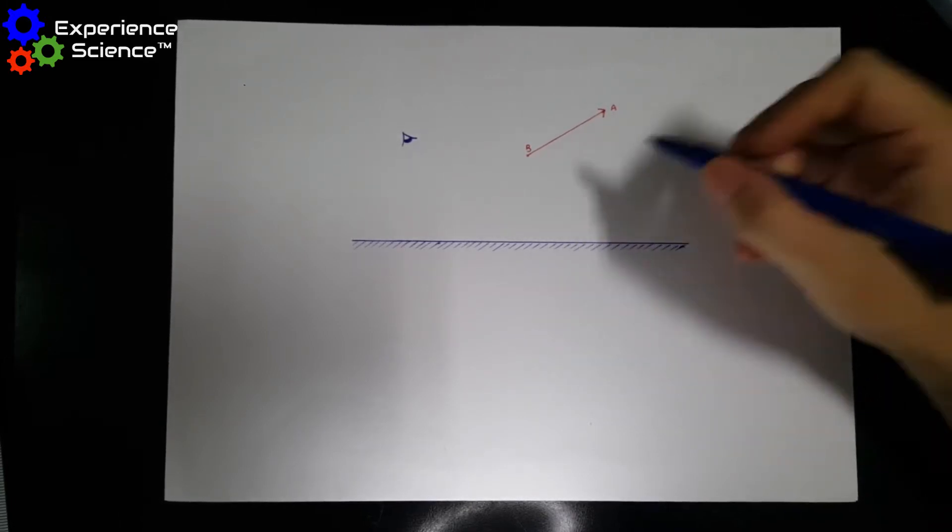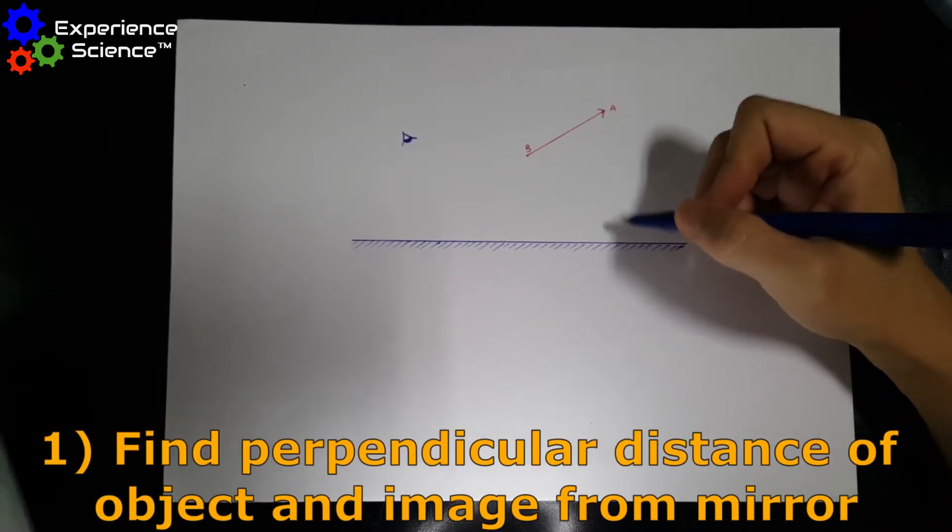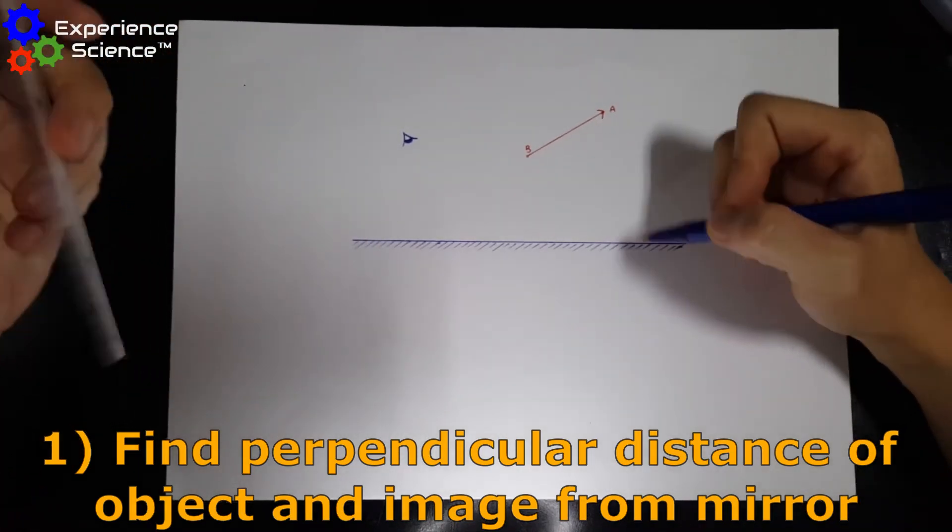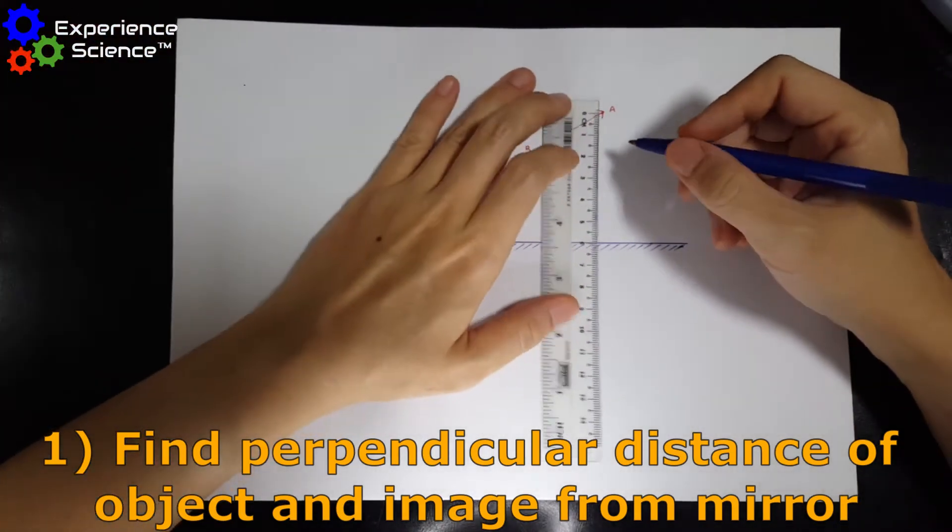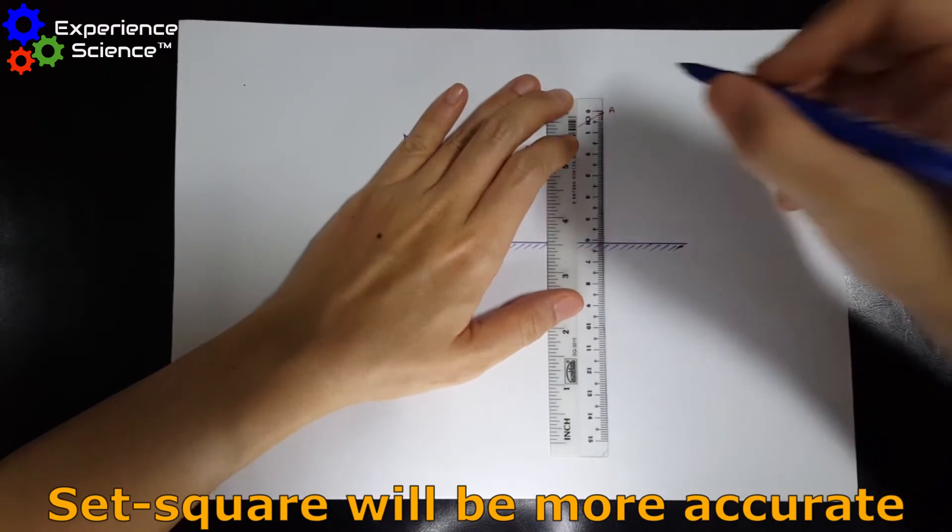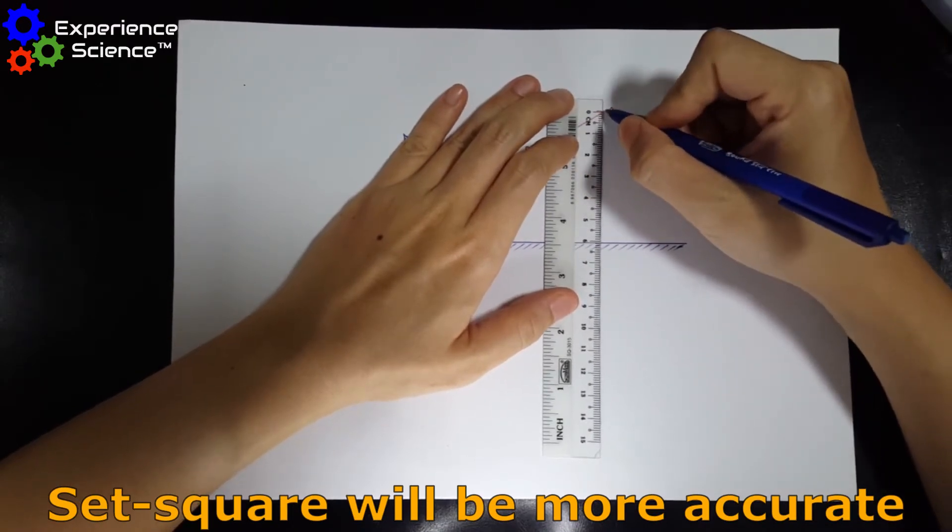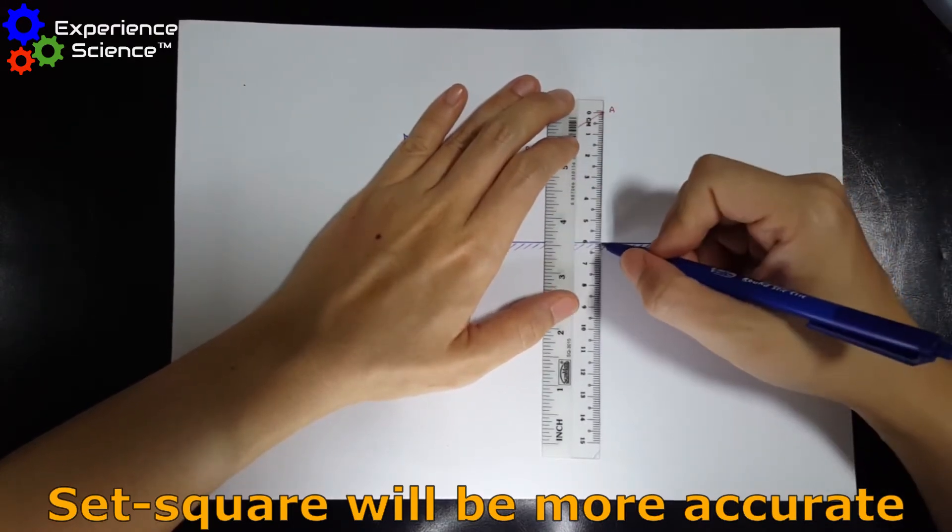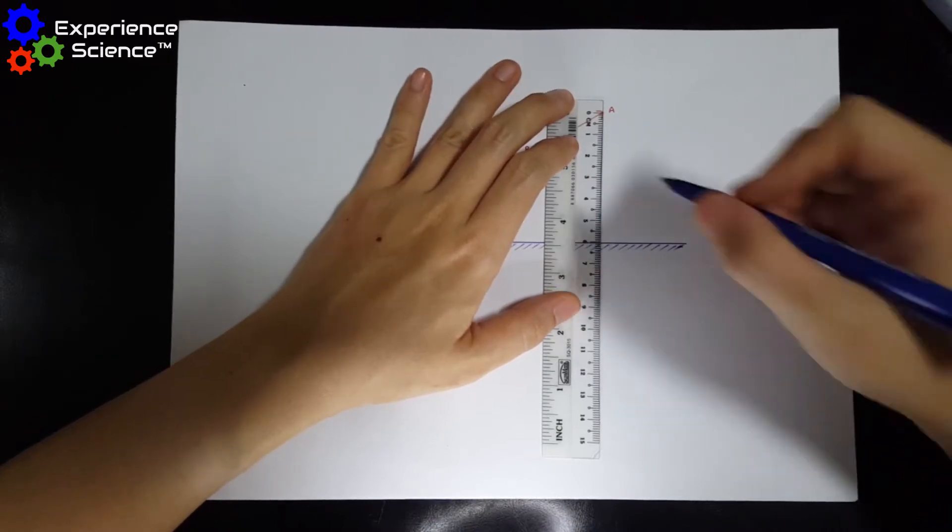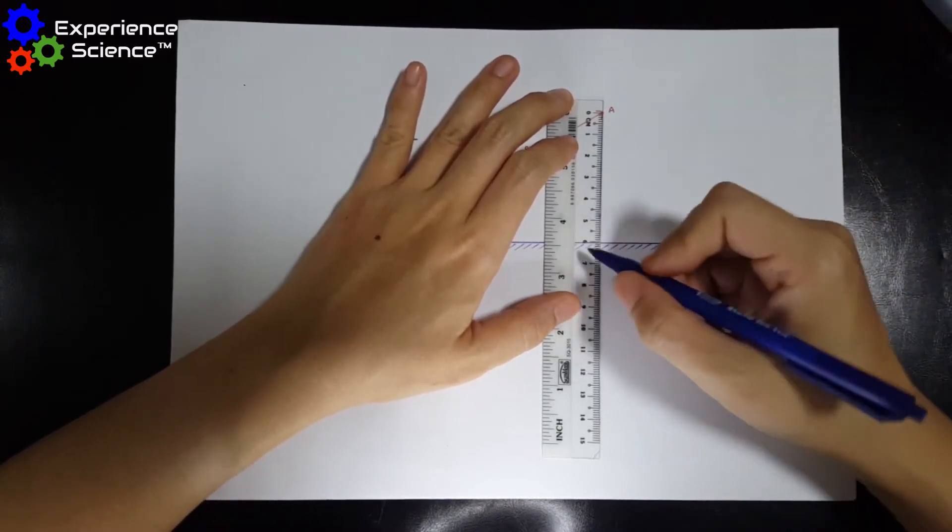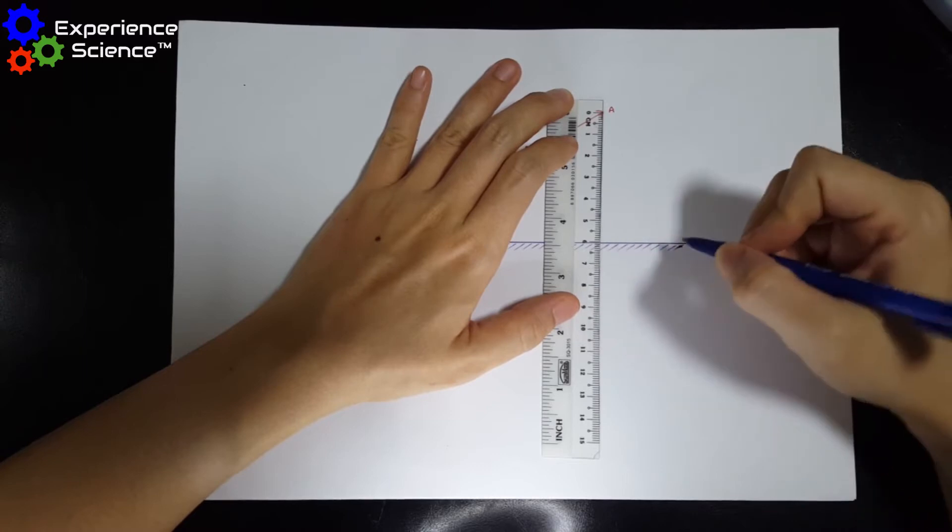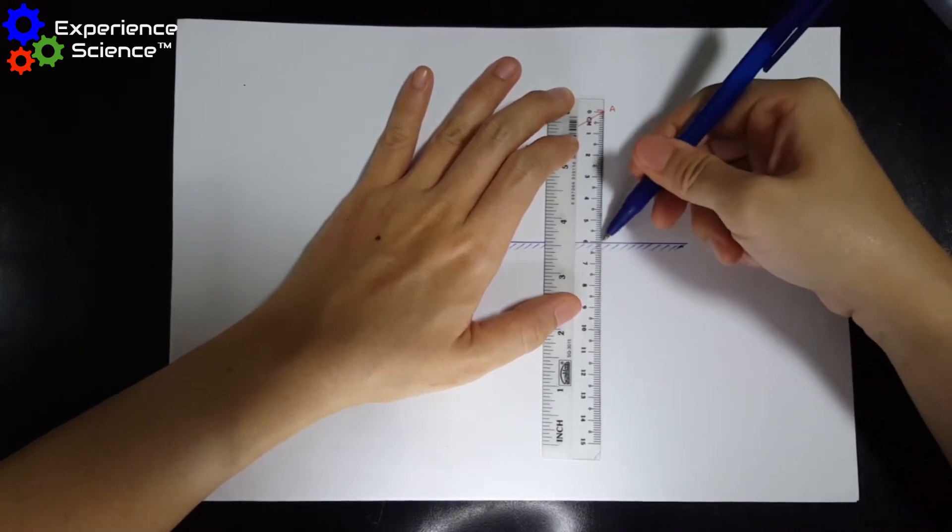The first thing we do is to find the perpendicular distance that the object is from the mirror. So we take a ruler and we measure from A to the mirror is about 6 cm. And therefore, the image of A must also be 6 cm away from this surface.